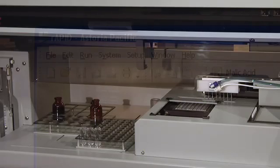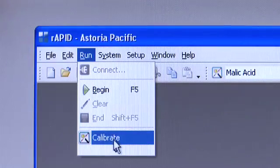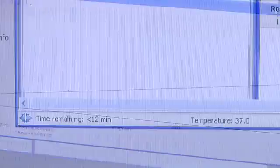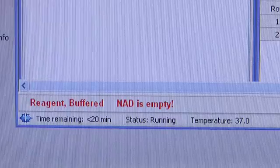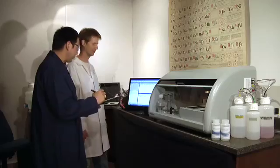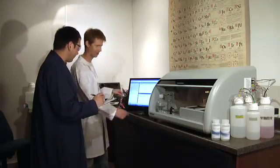During operation, the Astoria discrete can prepare calibration standards from a stock standard, dilute out-of-range samples, and detect low levels of reagents or samples. These automated procedures make the system easy to use and maintain, which also means less time spent training lab personnel.